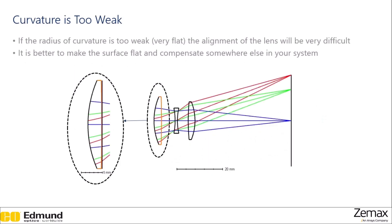Generally, avoid curvatures with radii that are very weak. When aligning optics, they will self-align as you press them between two fittings. However, when the curvature is very weak, this alignment is poor and can be very difficult. It's better to just make the surface flat and compensate for any needed corrections somewhere else in your system.